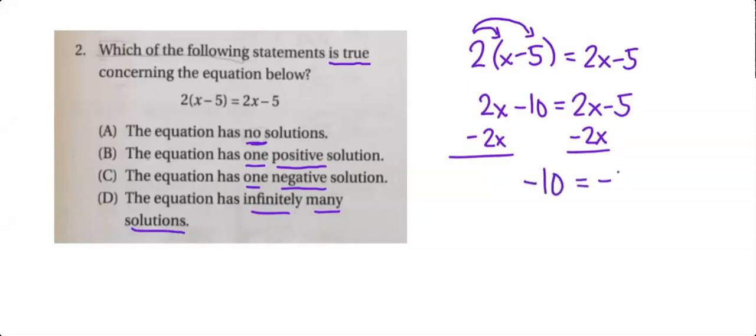Usually we end up with an x left over on one of the sides but in this case both the x's cancel each other out and we're left with negative 10 equals negative 5. And we know that that can never be true. So that means there are no solutions.